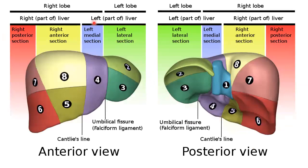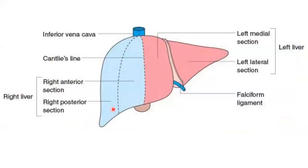In the Couinaud classification, segment six and segment seven lie posteriorly, so they are called the right posterior section, while segments five and eight lie anteriorly, forming the right anterior section. Segment four is called the left medial section, and segments two and three are called the left lateral section.